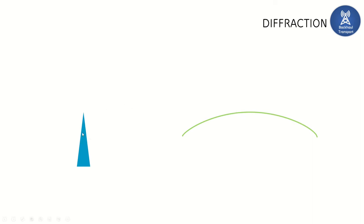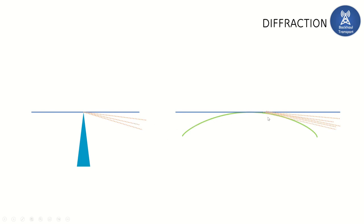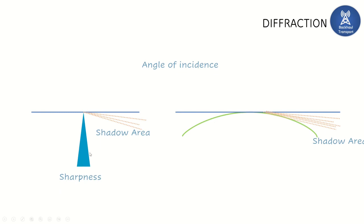For example, a knife-edge obstacle and a smooth surface obstacle are shown. The microwave beam enters and part of the energy is dispersed — this area is called the shadow loss. The shadow loss depends on two factors: the angle of incidence at which the wave grazes the obstacle, and the sharpness or smoothness of the obstacle surface.